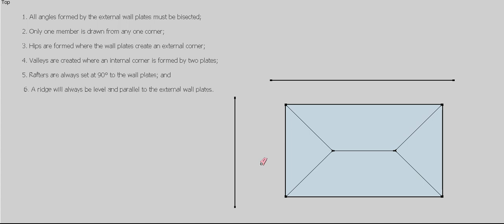So in this part 2 of our presentations on how to draw a roof plan, I'll show you how to take the plan view that we did before and turn it into our elevations. Let's have a quick look at the rules again. The main rule that's going to concern us this time is that a ridge always has to be level.